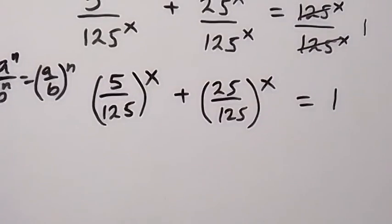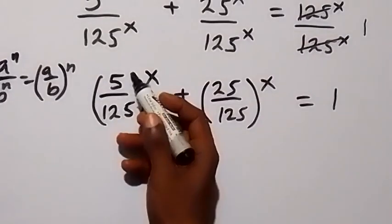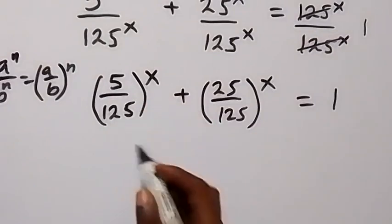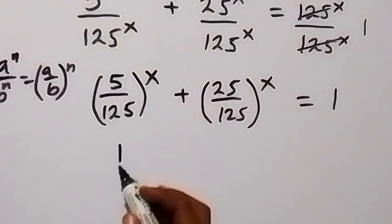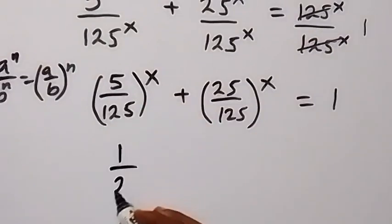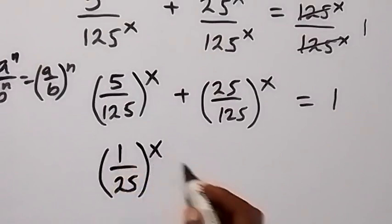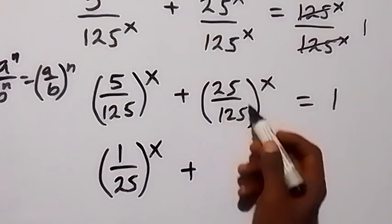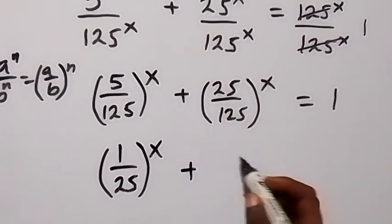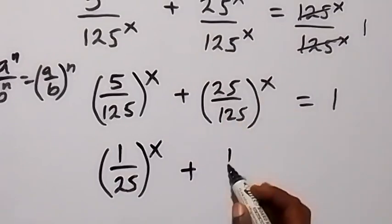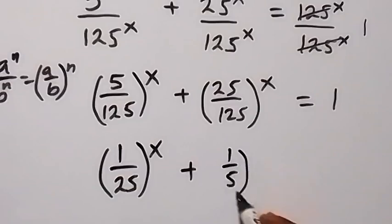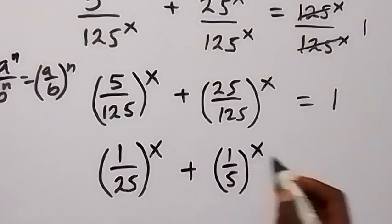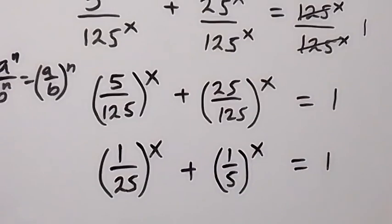In the next step, 5 goes into 125 twenty-five times, so this will mean 1 over 25 raised to the power x. Then plus — 25 goes into 125 five times — so we have 1 over 5 raised to the power x, which equals 1.